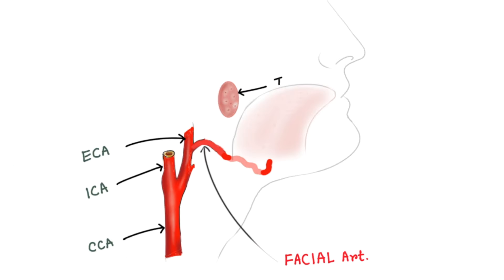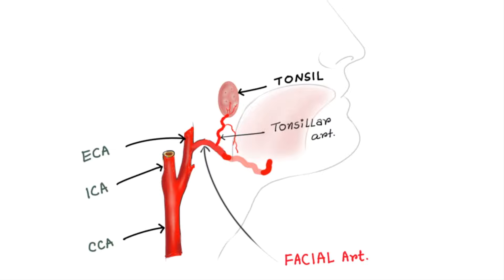The tonsillar branch ascends between the pterygoideus internus and styloglosus muscle, then along the side of the pharynx, perforating the superior pharyngeal constrictor. It supplies the palatine tonsil and the root of the tongue.